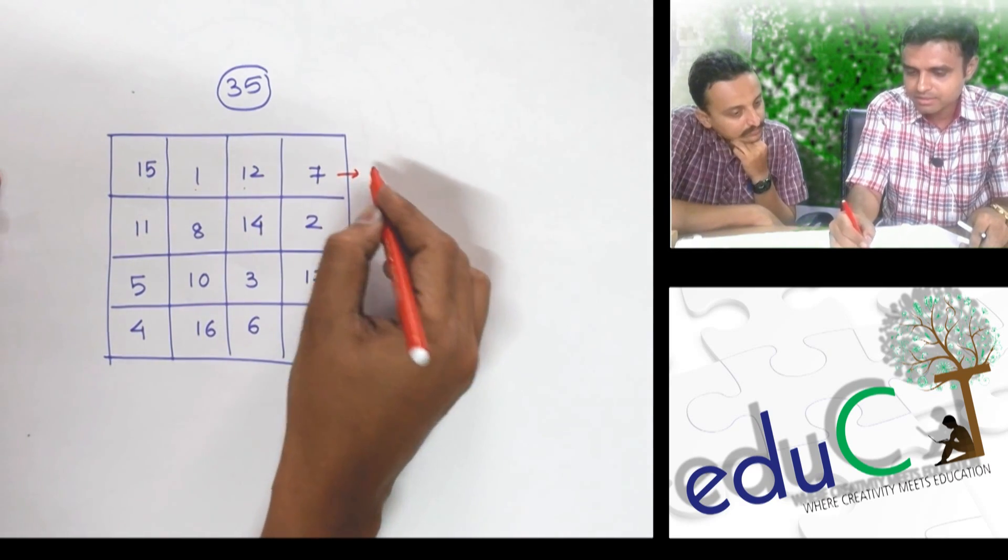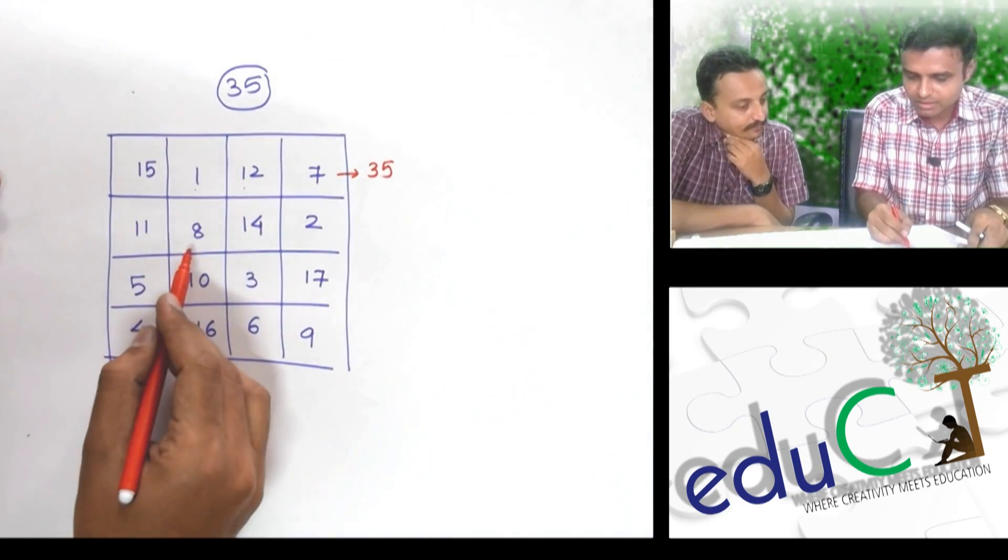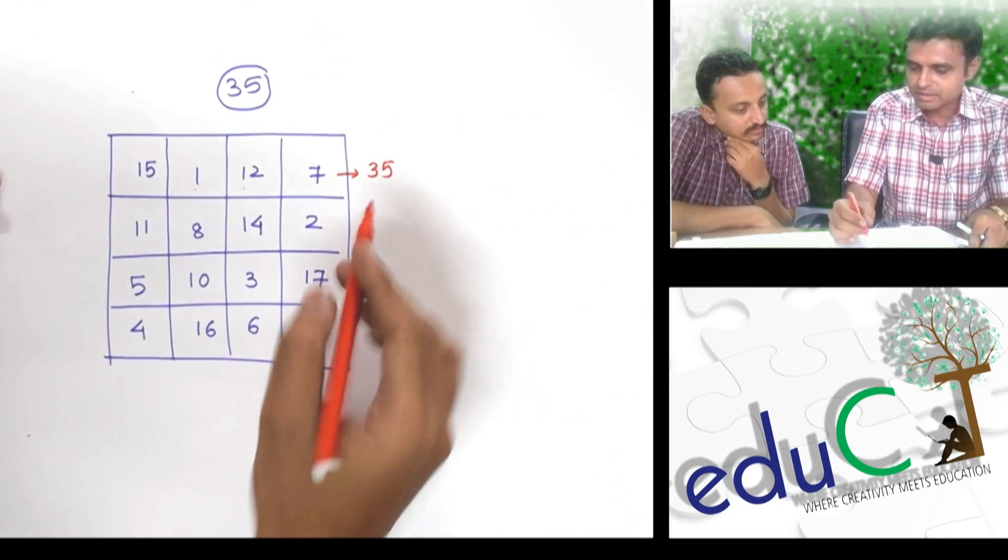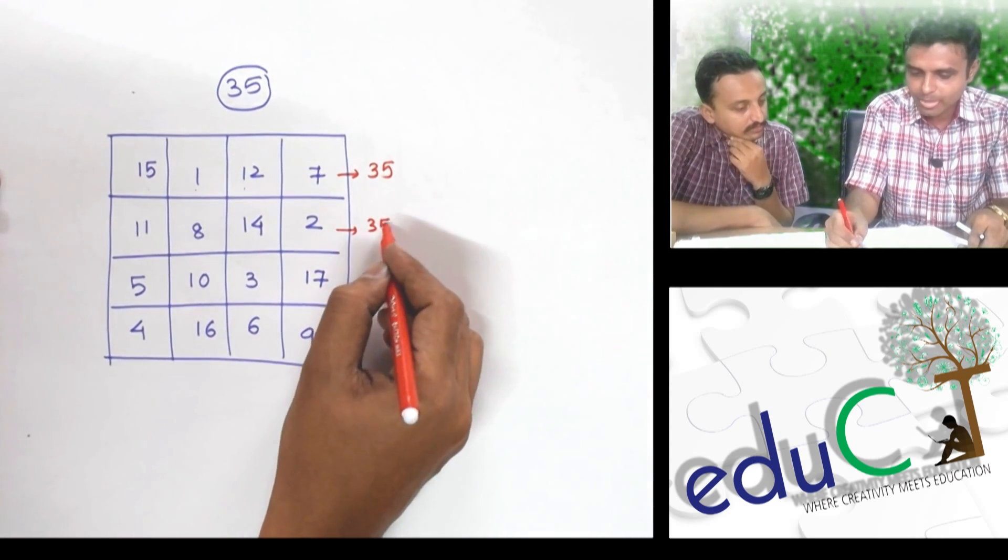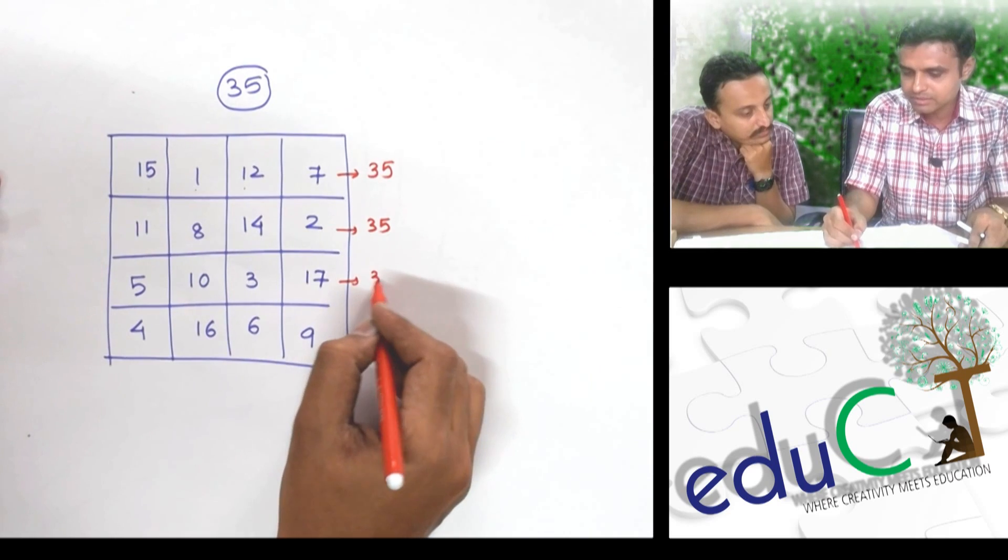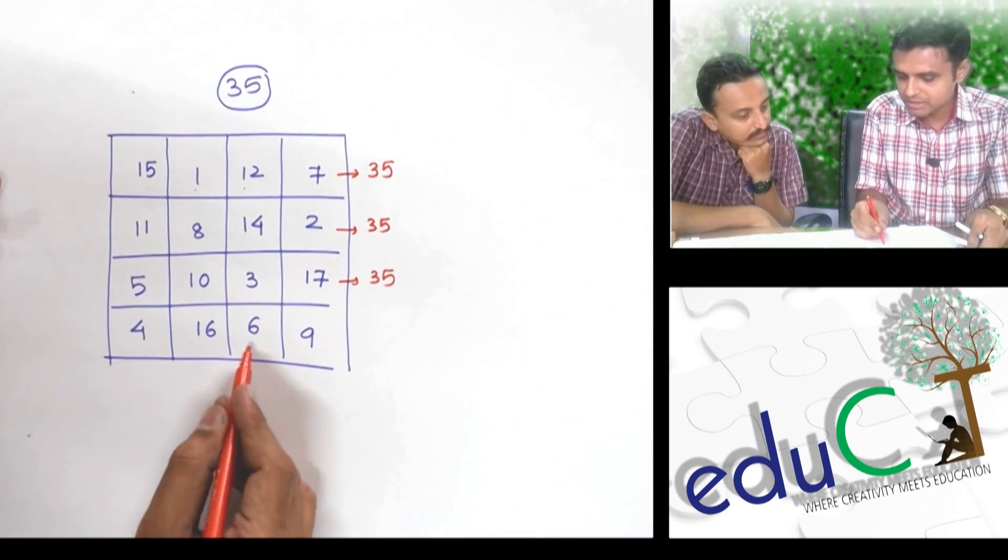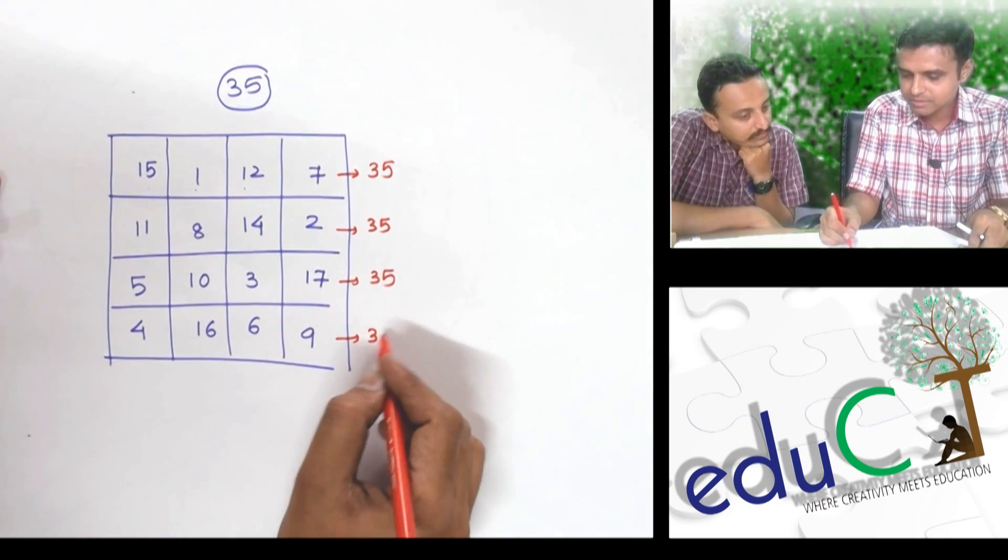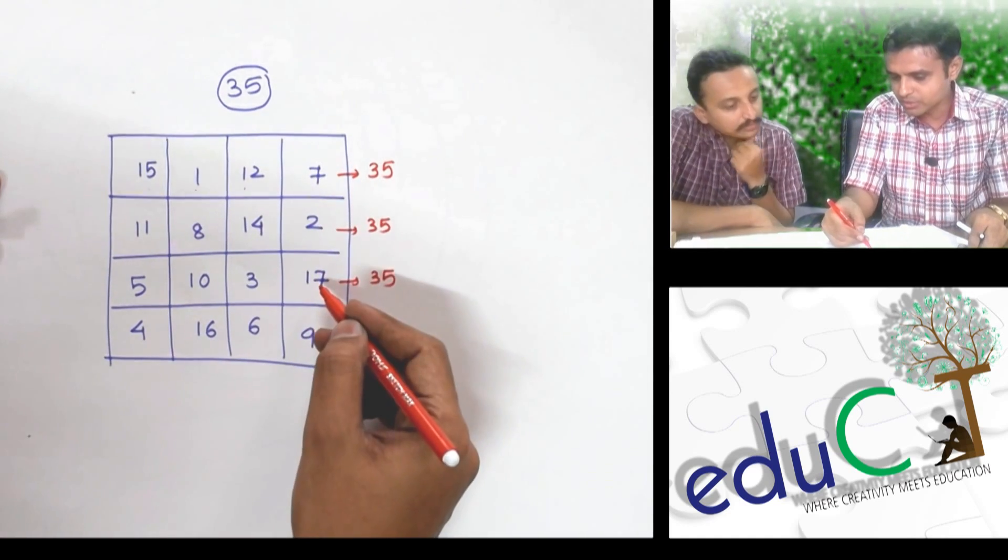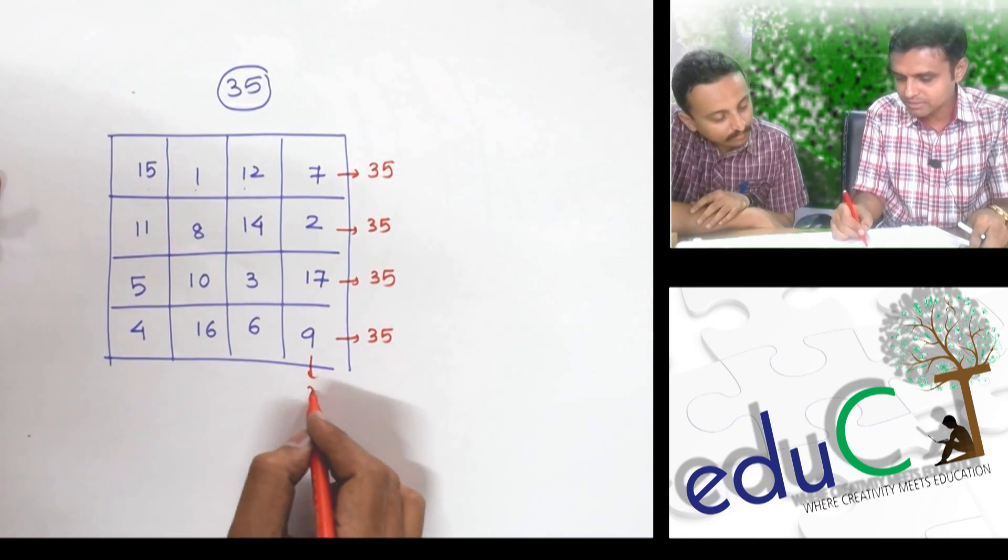15, 1, 12, 7, 35. 11, 8, 14, 2, 35. 5, 10, 3, 17, 35. 4, 16, 6, 9, 35. 15, 10, 6, 4, 35. 1, 8, 10, 16, 35. 12, 14, 3, 6, 35. 7, 2, 17, 9, 35.